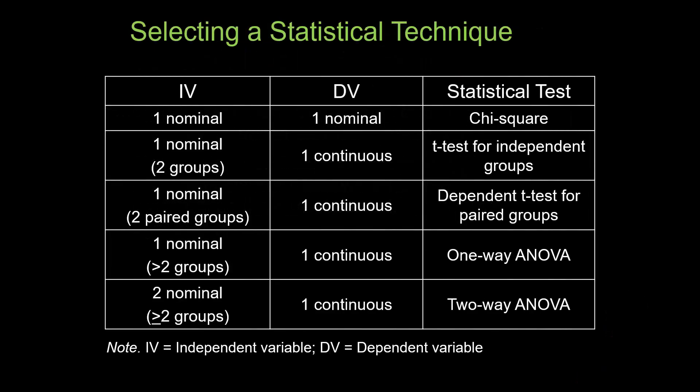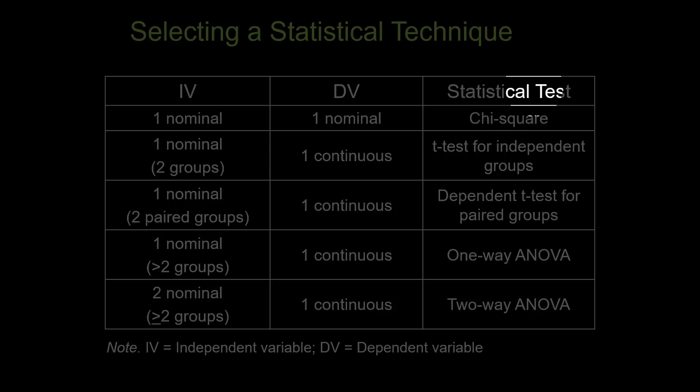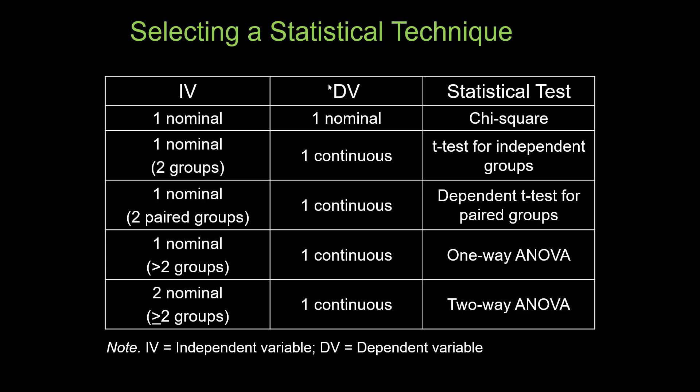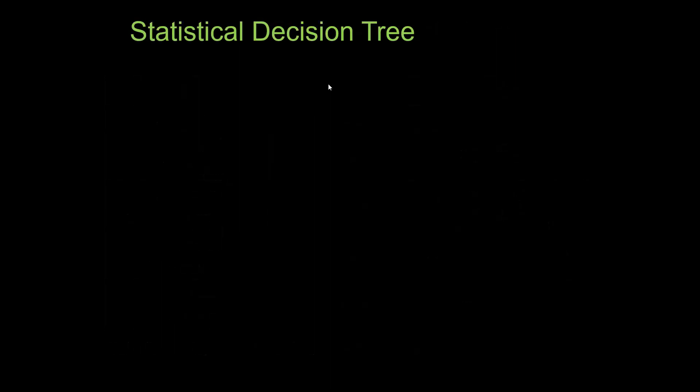What type of statistical test to run largely depends on the types and levels of the independent and dependent variables. If both variables are nominal or categorical, use a chi-square. For comparing two groups with a continuous dependent variable, use a t-test. If using the same group tested twice, use a dependent t-test. For more than two groups, use a one-way ANOVA; with two factors, a two-way ANOVA. These details are covered separately in individual videos.